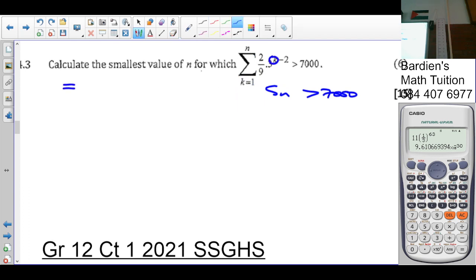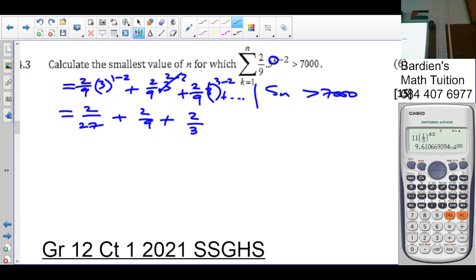So we start with the first three terms. So if k is 1, it's going to be 2 over 9 times 3 to the 1 minus 2 plus 2 over 9 times 3 to the 2 minus 2 plus 2 over 9 into 3 times 3 minus 2 and so on. So that is simply going to give us 2 over 27 plus 2 over 9 plus 2 over 3 plus and so on. So because the sigma stands for the sum of, I'm going to work out the sum of geometric progression.